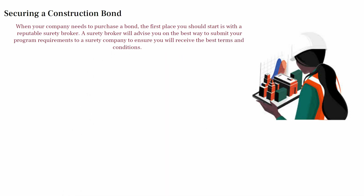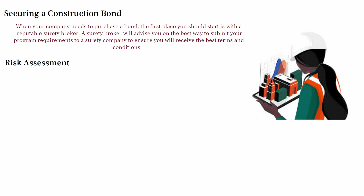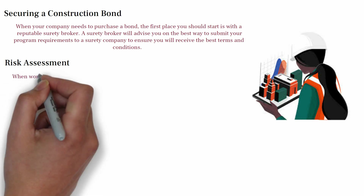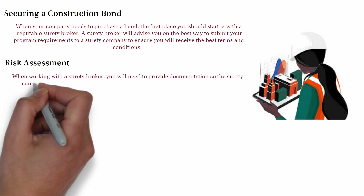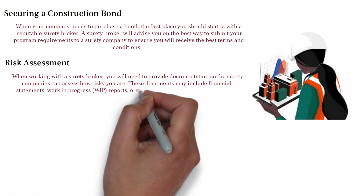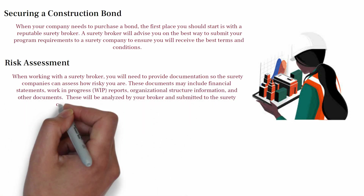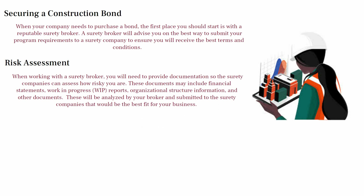Risk assessment — when working with a surety broker, you will need to provide documentation so that surety companies can assess how risky you are. The documents include financial statements, work-in-progress reports, organizational structure information, and other documents. These will be analyzed by your broker and submitted to the surety companies that will be the best fit for your business.